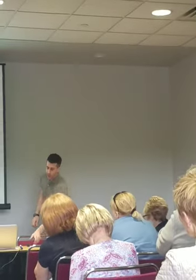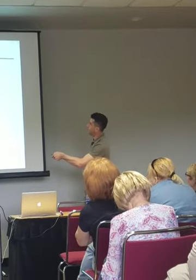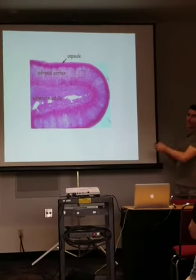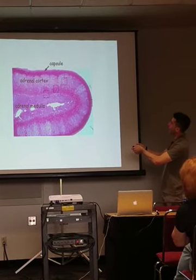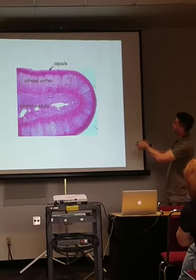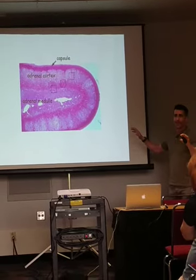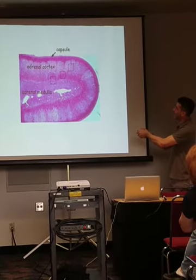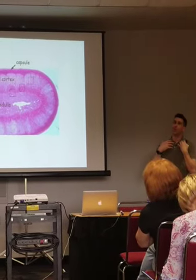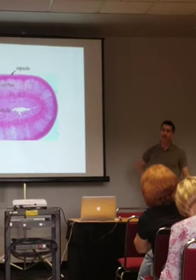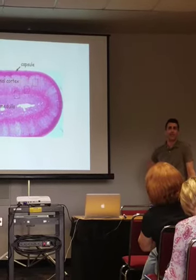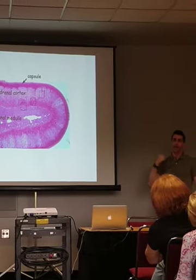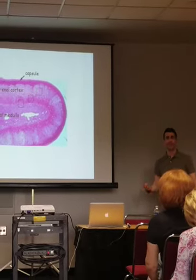Once immune-mediated destruction occurs, the damage is permanent. Looking at the adrenal gland microscopically, the cortex — which normally lies between the capsule and the medulla — is obliterated, replaced by a few fat cells. There's no way for it to regenerate. This is likened to type 1 diabetes, where once the insulin-producing cells are gone, they never come back.